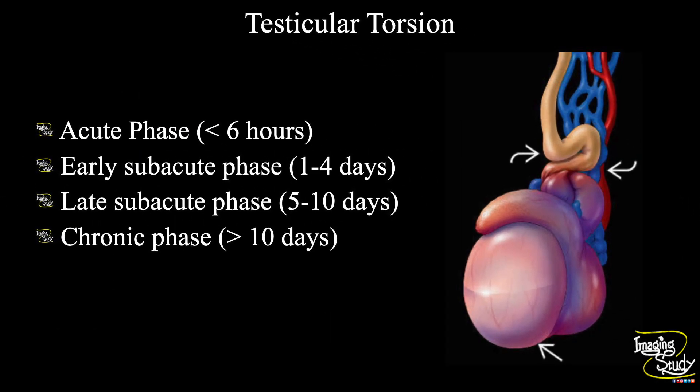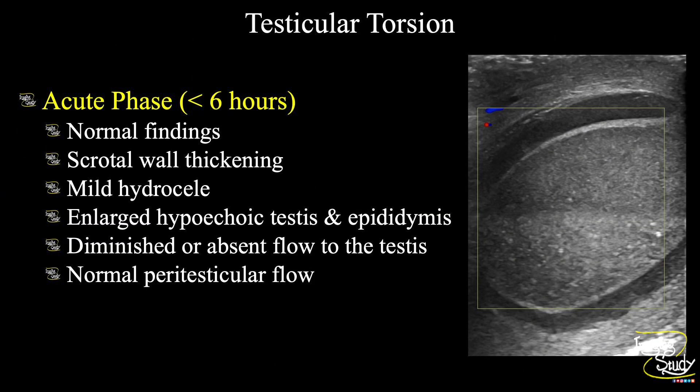Before ending, a brief overview of testicular torsion stages on ultrasound. There are four stages: acute, early sub-acute, late sub-acute, and chronic. The acute phase denotes less than six hours of torsion, where you may get normal ultrasound findings, or you may see an enlarged hypoechoic testis and epididymis with diminished or absent flow within the parenchyma. The scrotal wall may be thickened, with mild reactionary hydrocele and normal peritesticular flow.